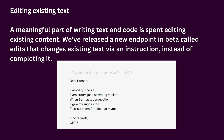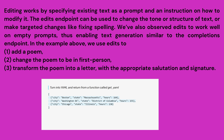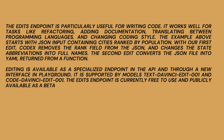Editing existing text: a meaningful part of writing text and code is spent editing existing content. We've released a new endpoint in beta called Edits that changes existing text via an instruction instead of completing it. The Edits endpoint is particularly useful for writing code — it works well for tasks like refactoring, adding documentation, translating between programming languages, and changing coding style. The example above starts with JSON input containing cities ranked by population. With the first edit, Codex removes the rank field from the JSON and changes the state abbreviations into full names. The second edit converts the JSON file into YAML returned from a function. Editing is available as a specialized endpoint in the API and through a new interface in Playground, supported by models text-davinci-edit-001 and code-davinci-edit-001. The Edits endpoint is currently free to use and publicly available as a beta.